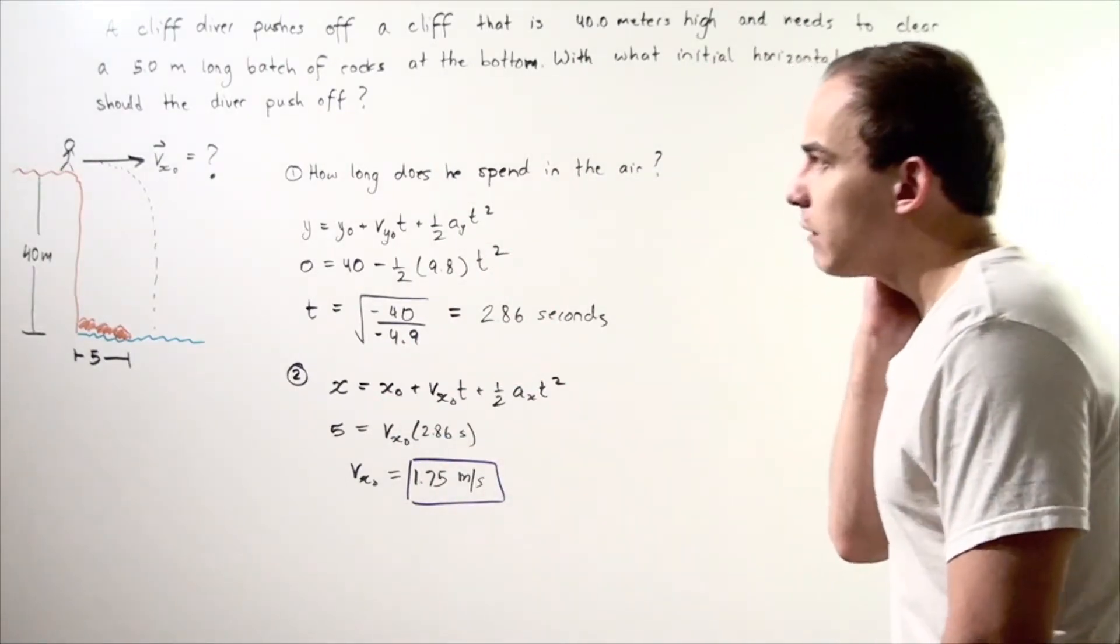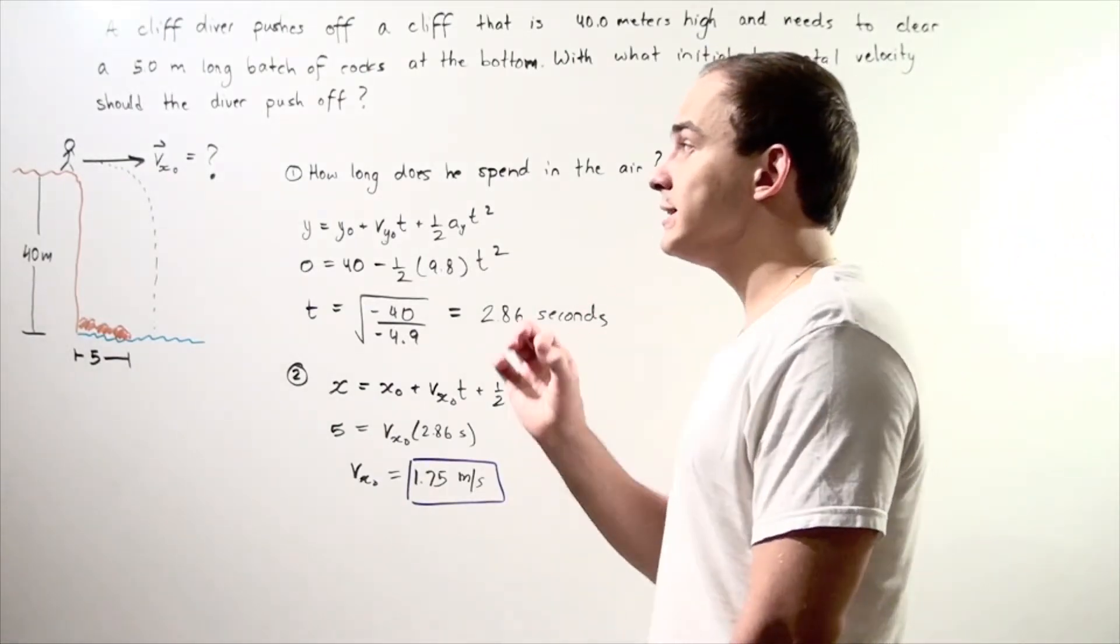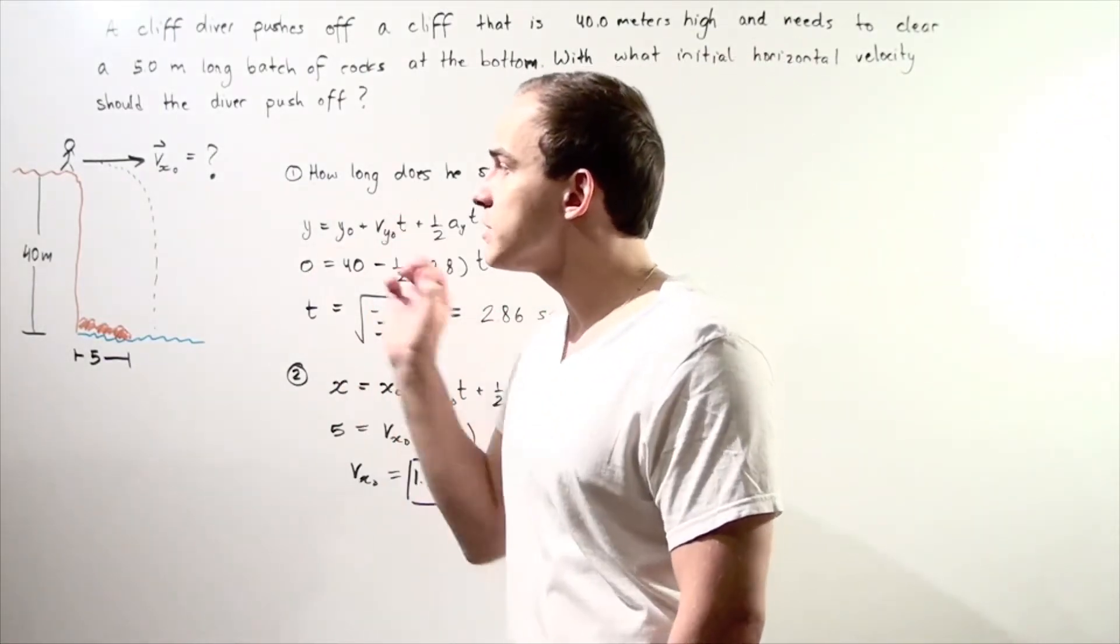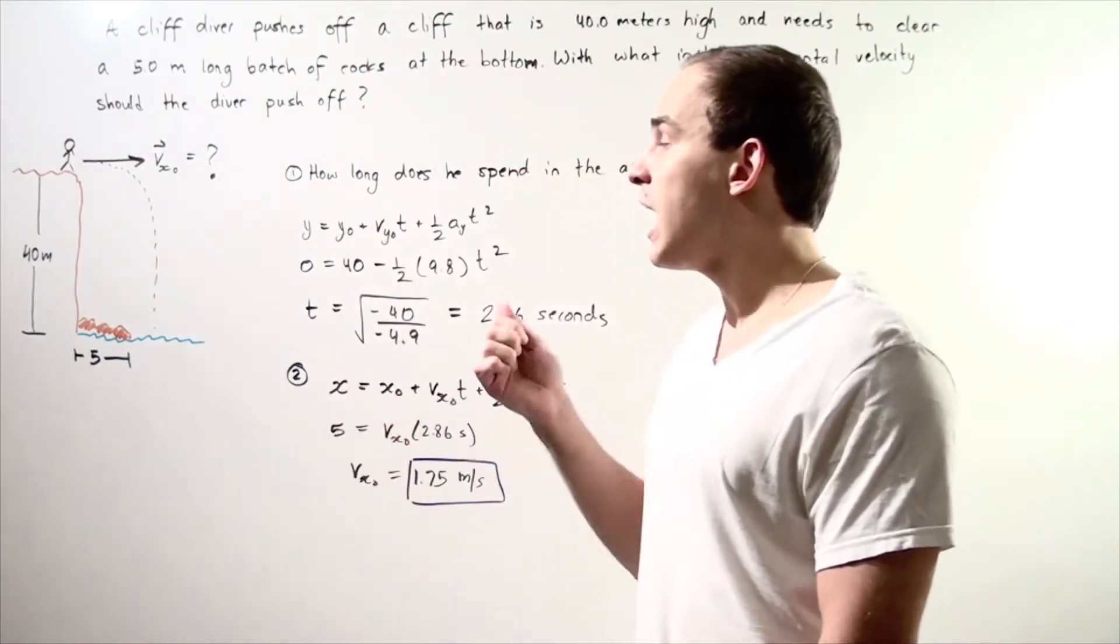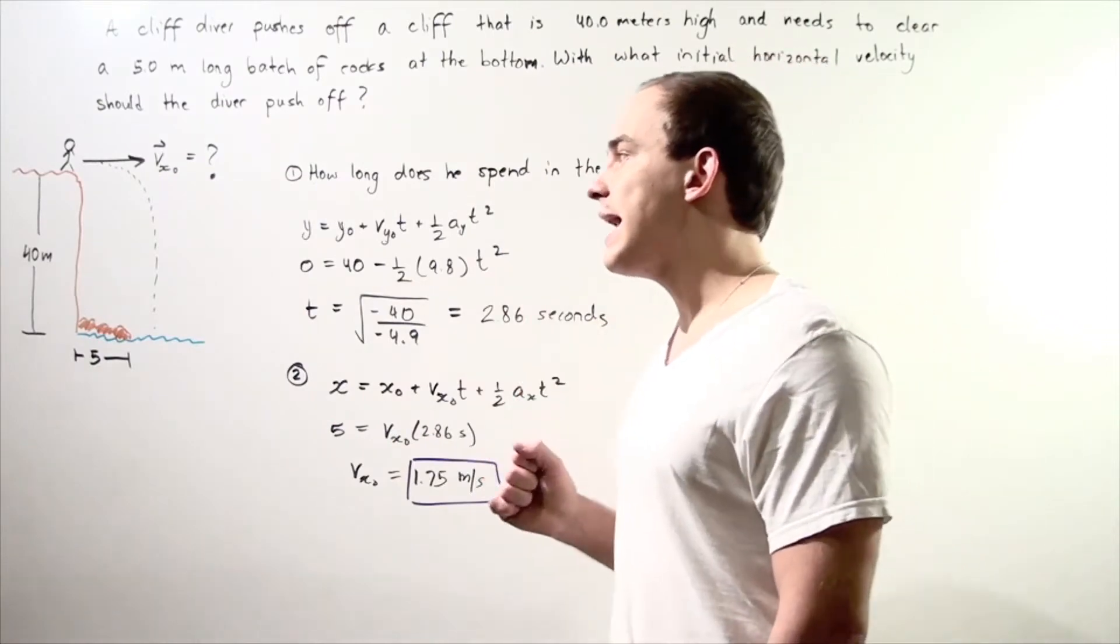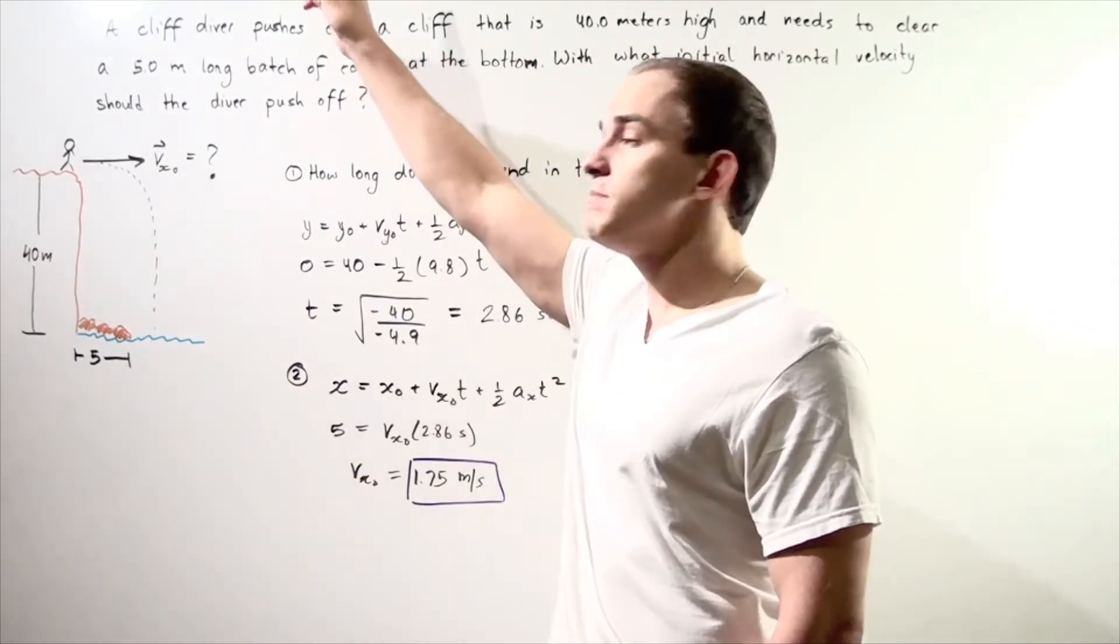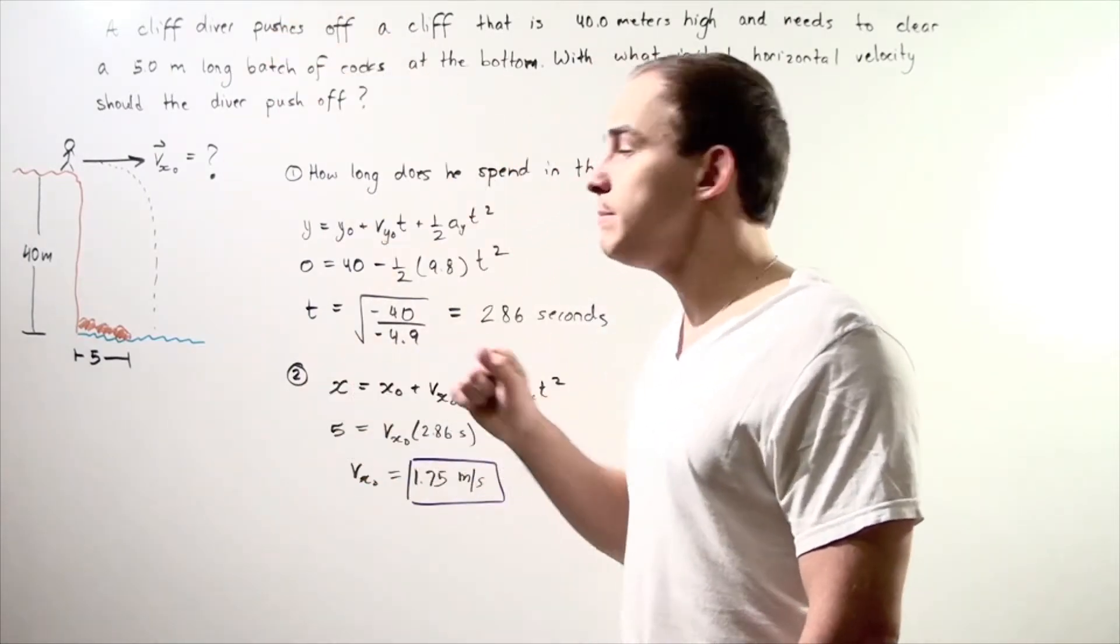Before we solve the problem, let's make a few assumptions. First, we're making the assumption that there is no air resistance, and that means our acceleration due to gravity is 9.8 meters per second squared. Now, we're choosing upward to be positive, downward to be negative.